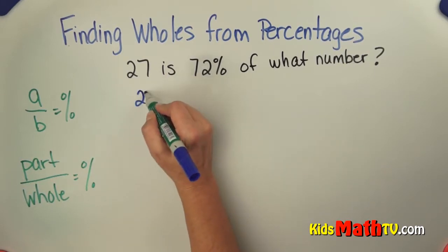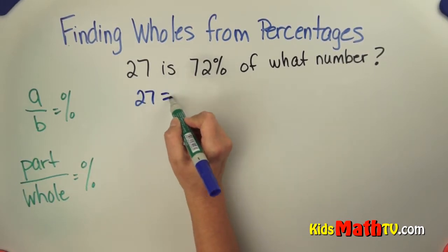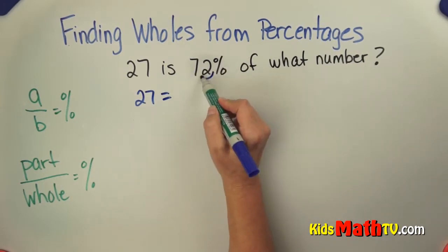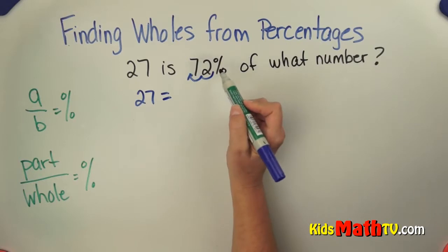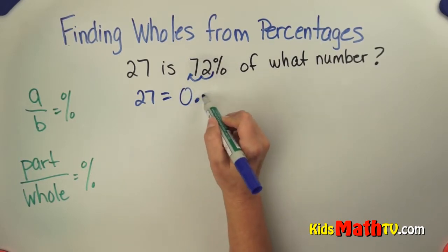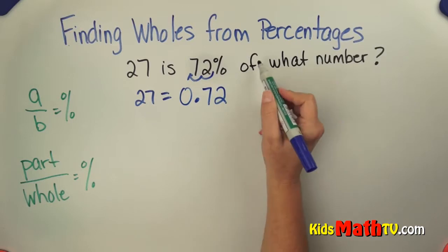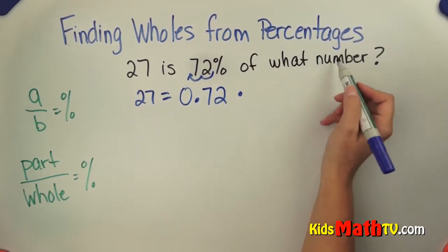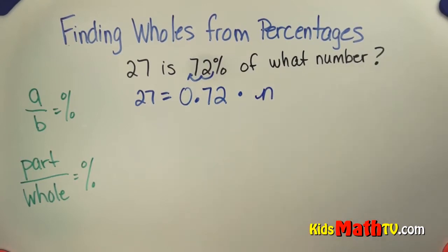So 27 simply translates to 27. Is means equals. 72% - we'll make a percent into a decimal by dividing by 100. That becomes 0.72. Of in math means to multiply. And what number? We simply use a variable. So now we have a mathematical equation.